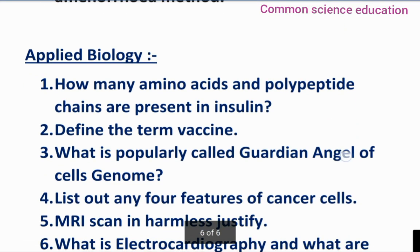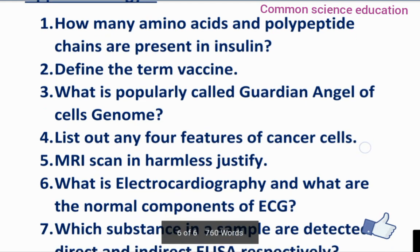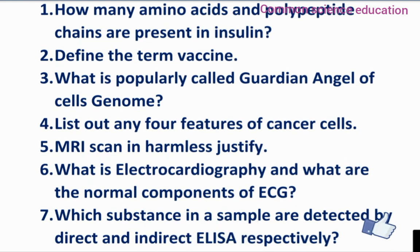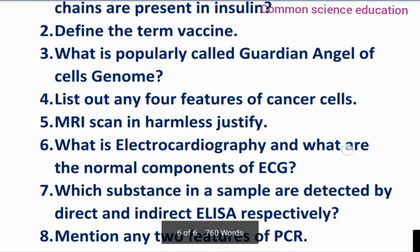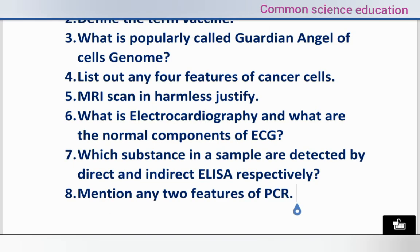Applied biology important questions: How many amino acids and polypeptide chains are present in insulin? Define the term vaccine. What is popularly called the guardian angel of the cell's genome? List out any four features of cancer cells. MRI scan is harmless — justify. What is electrocardiography and what are the normal components of it? Which substances in a sample are detected by direct and indirect ELISA respectively? Mention any two features of PCR.